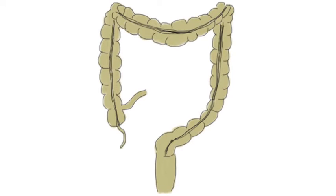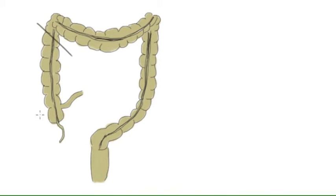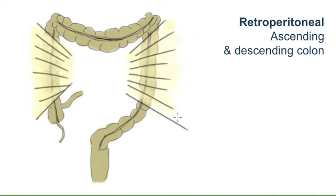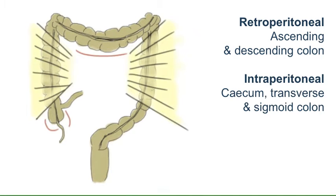As you will know, the large bowel is covered by a layer of peritoneum. In areas such as the ascending and descending colon, this layer of peritoneum typically holds the colon in a retroperitoneal position and so there is no mesentery for these parts of the bowel. In other places such as the cecum, transverse and sigmoid colon, the peritoneal covering forms a mesentery, meaning these parts of the colon are intraperitoneal and relatively mobile.